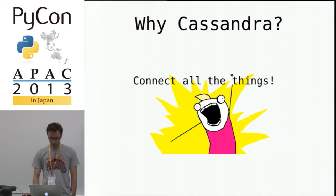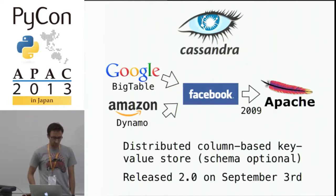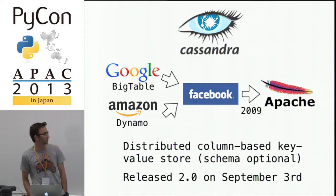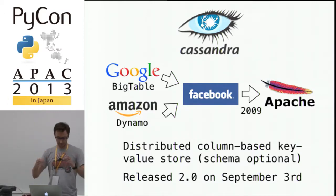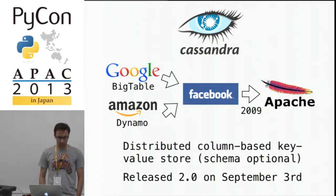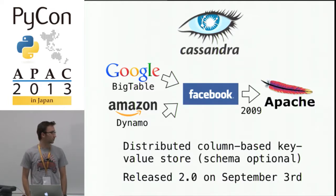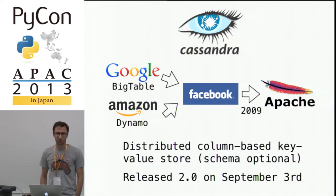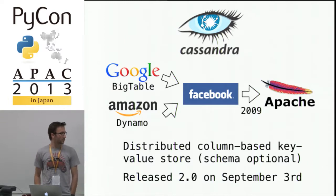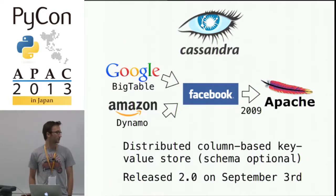From sensor data to system logs, we found that Cassandra was a perfect match for this use case. The origin of Cassandra comes from a Google article on Bigtable and another article from Amazon. It was used by Facebook and then released under the Apache license in 2009. It's a distributed, column-based key-value store — I feel that's the most accurate definition. The release of Cassandra 2.0 happened just about one week ago, so it's getting more mature.